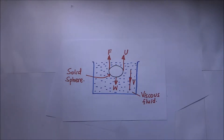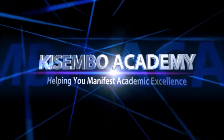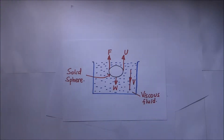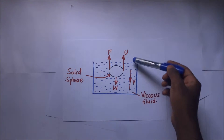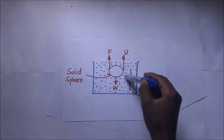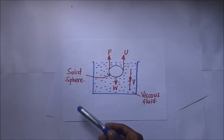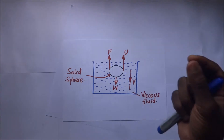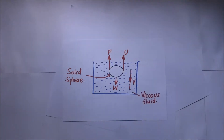In this video, we get to discuss the vertical motion of a body when it is falling through a viscous fluid. We have a diagram describing a solid sphere falling through a viscous fluid. This viscous fluid could be porridge, glue, or engine oil — those thick fluids that are hard to penetrate because of their viscosity.